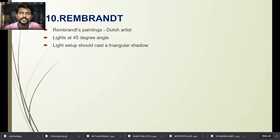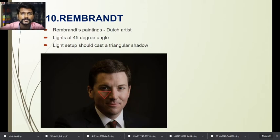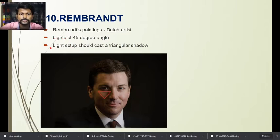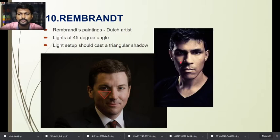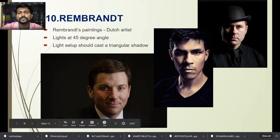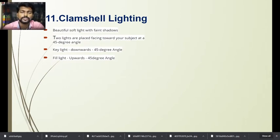The tenth type is Rembrandt lighting, a very interesting technique. Rembrandt was a famous Dutch artist whose paintings are well known for this style of lighting. The light is set at a 45-degree angle and creates a triangular shadow on the cheek. It is a form of side lighting — the light comes from one side and creates a triangle of light on the cheek, as seen in the example images.